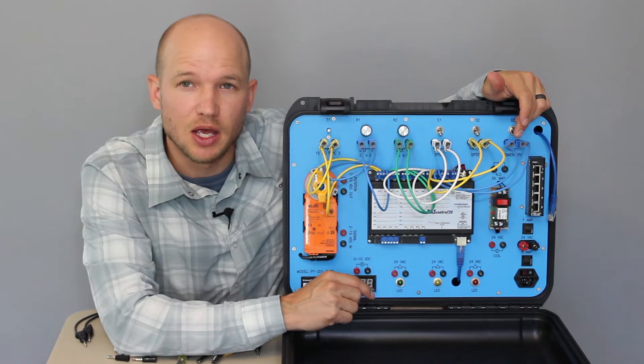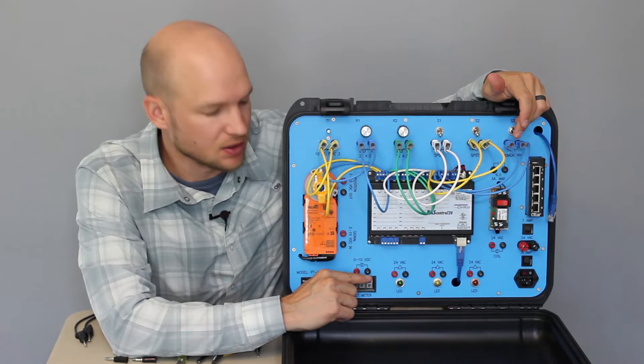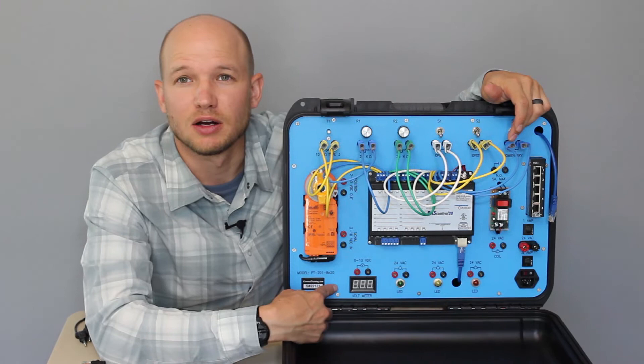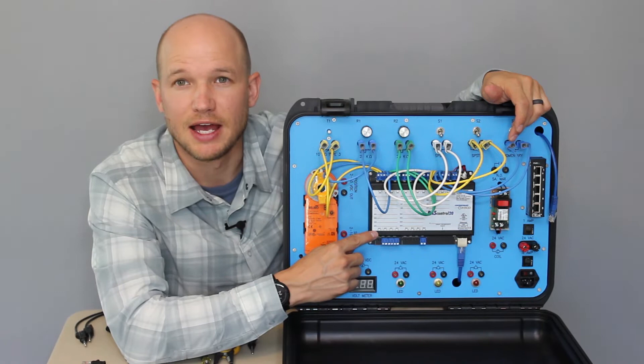So the black is going to be our common, which is on the controller labeled as a C. And if you see on the controller way over here, it says DC common or AC low. And so the red is going to be our AC high or DC plus. And on the controller that's labeled as A for the input and outputs.